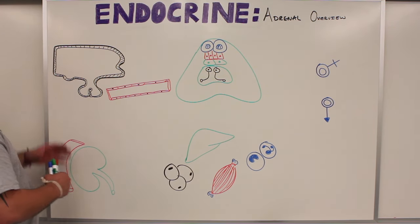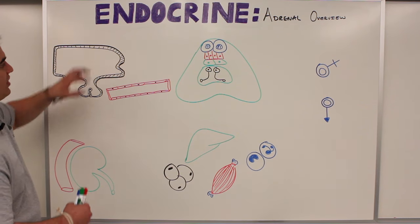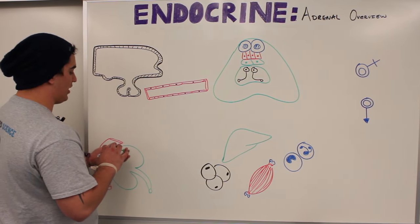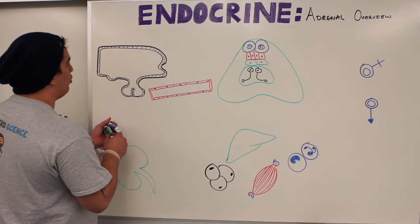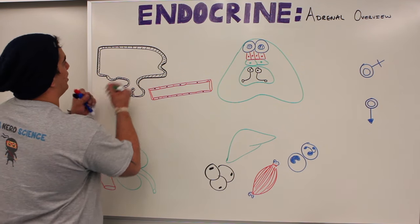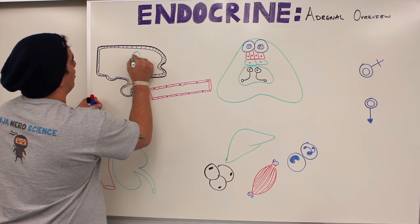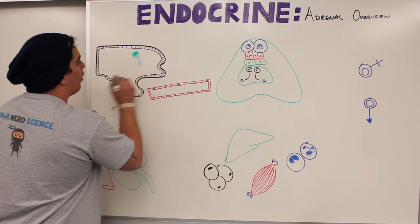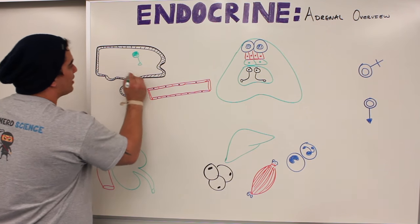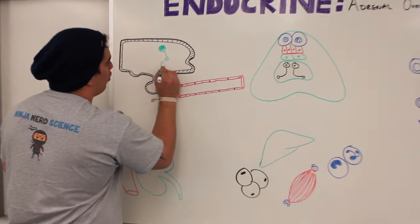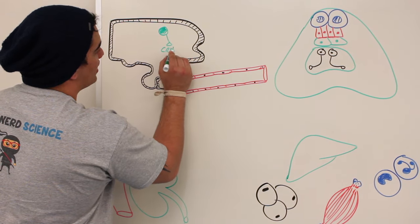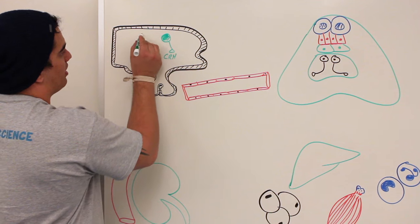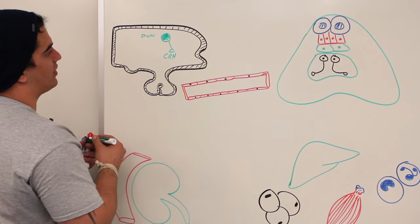We have to start in the hypothalamus. There's a specific nucleus located in the hypothalamus — the paraventricular nucleus — and it secretes a hormone called corticotropin-releasing hormone.